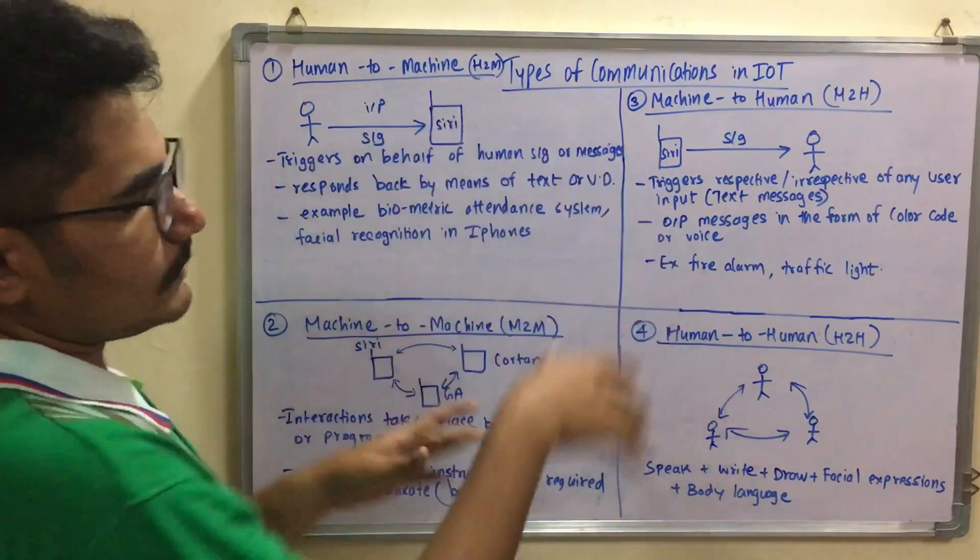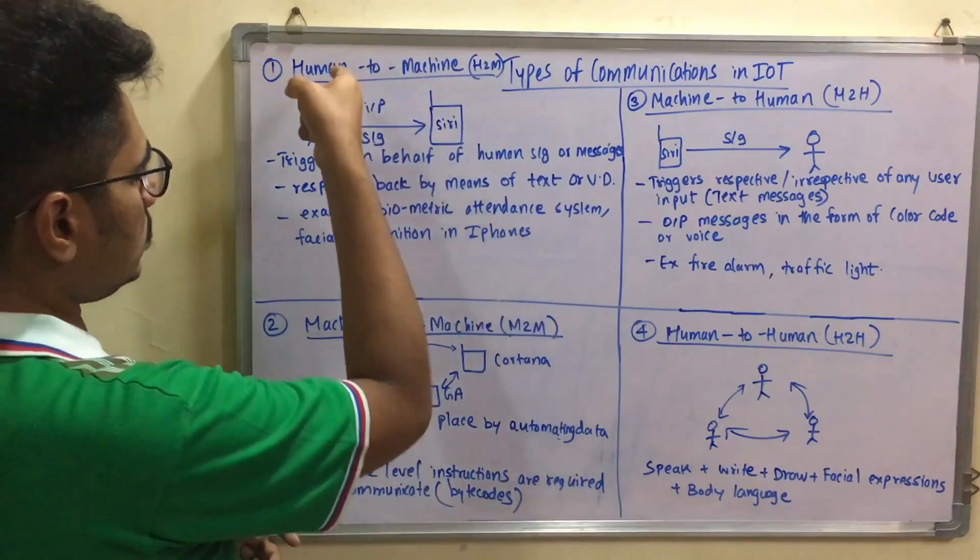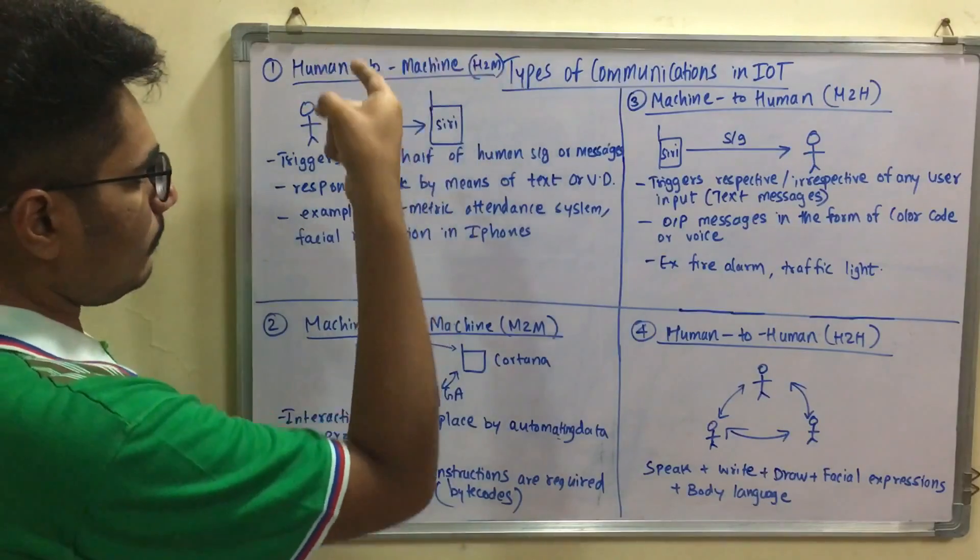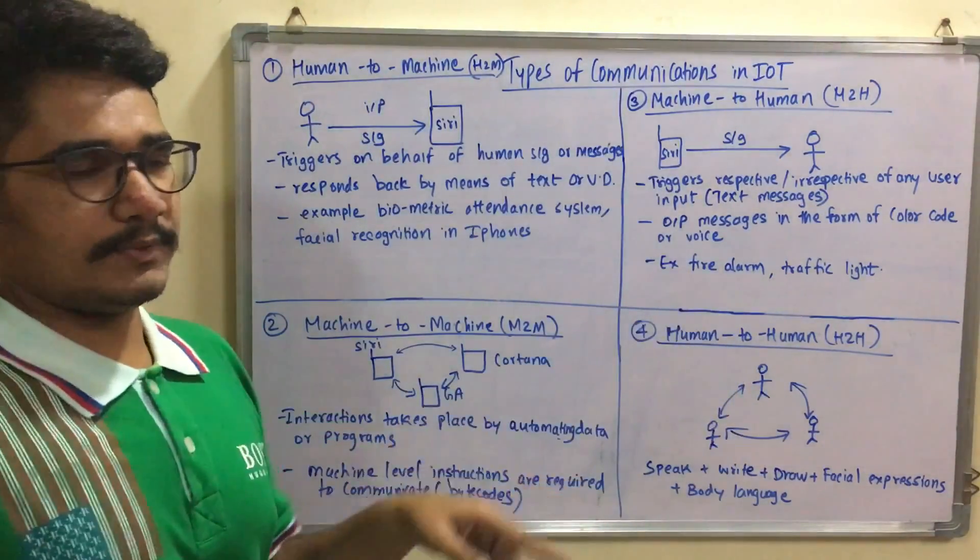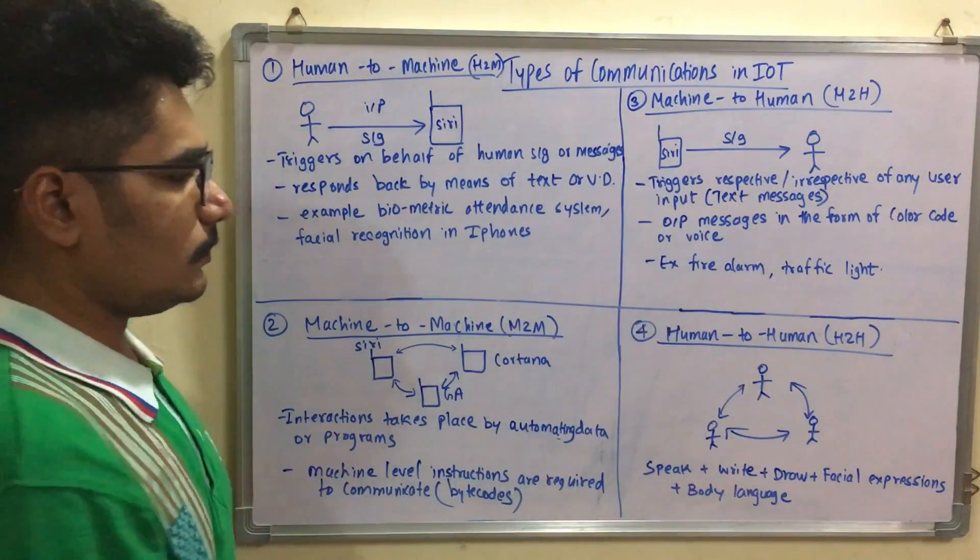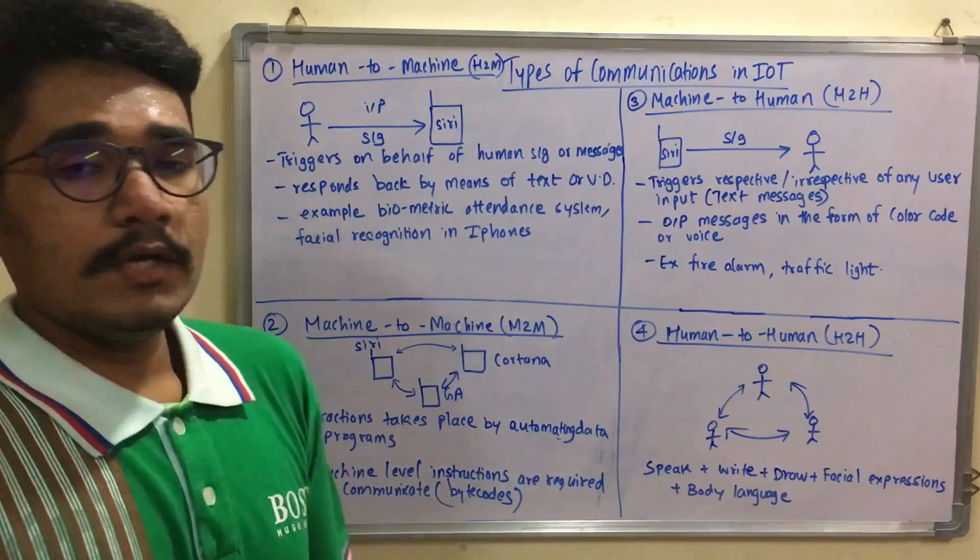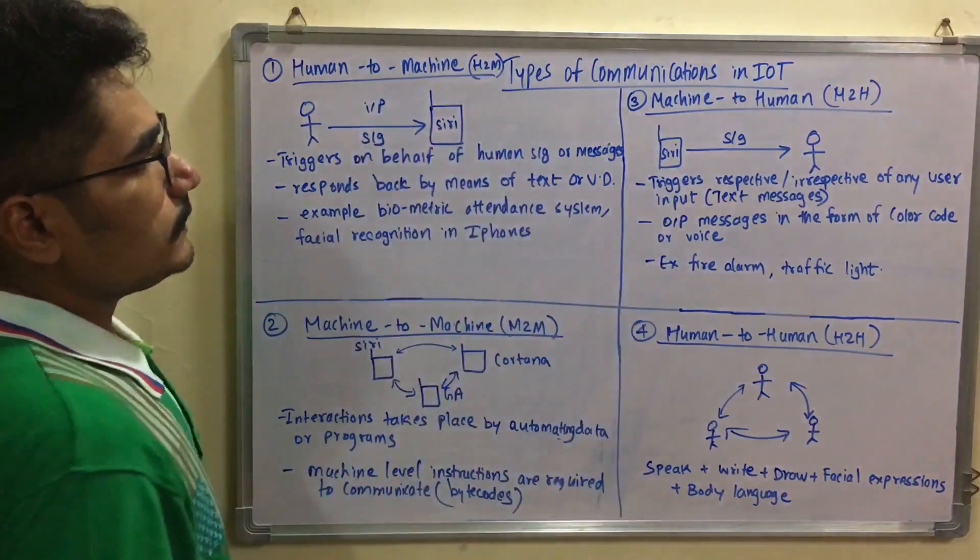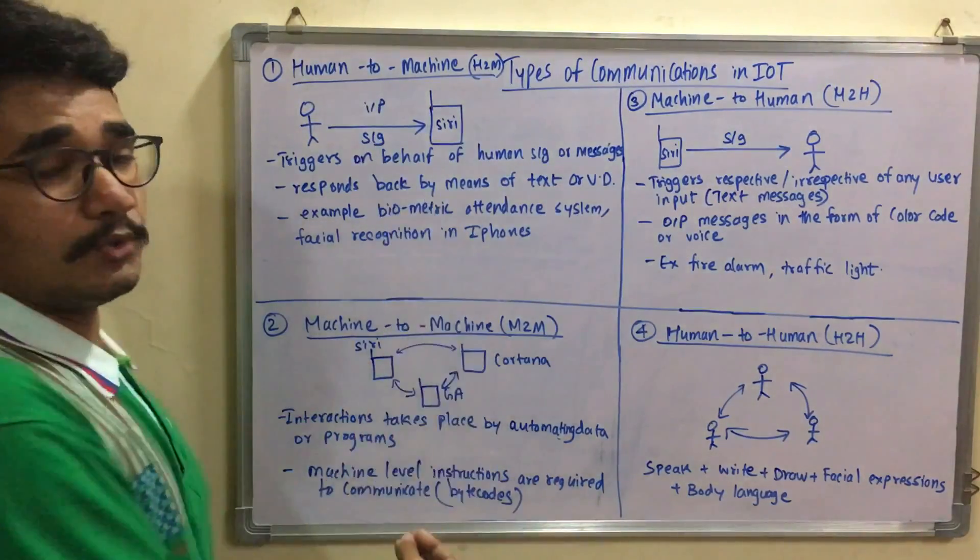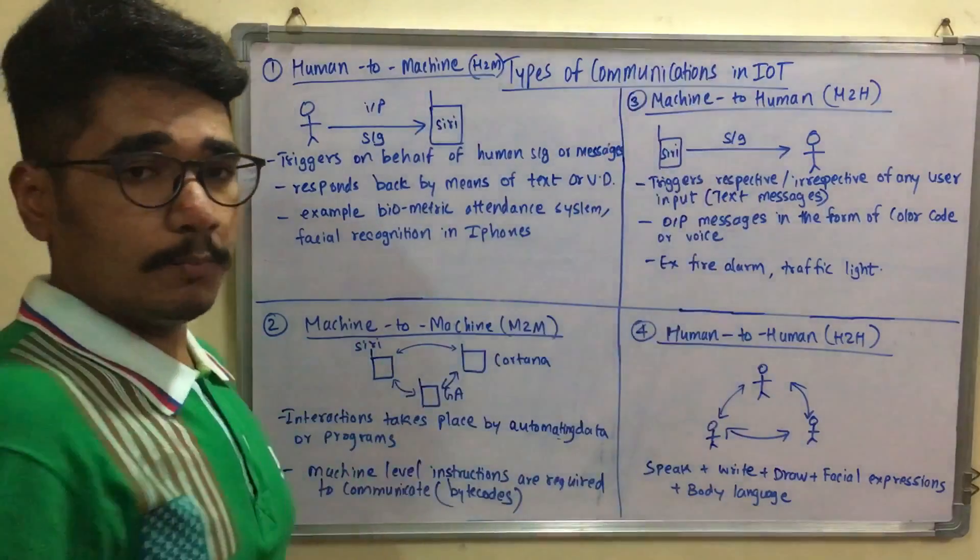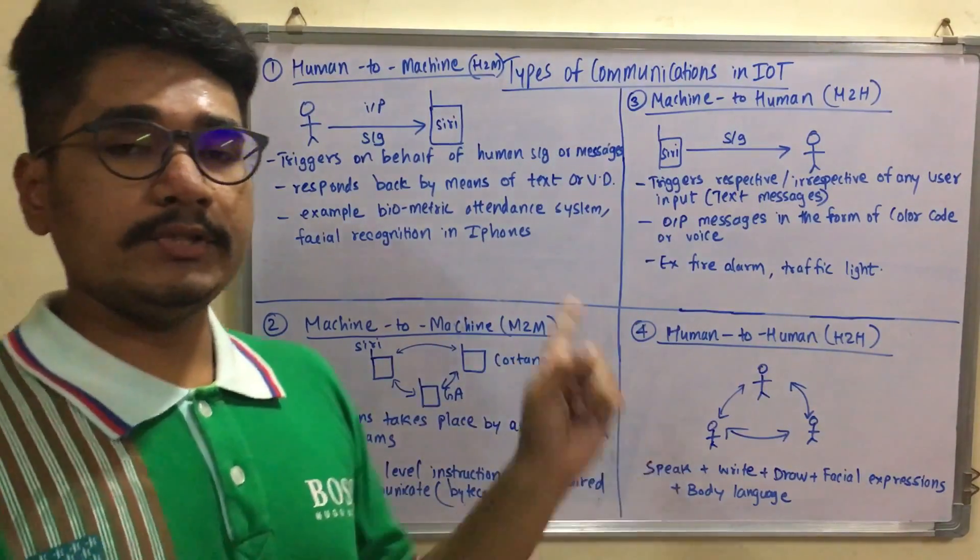To summarize, we have four different types, but frankly speaking, devices only come into picture in H2M, M2M, and M2H. H2H is an exception where devices don't come into picture, but to categorize it we include human to human interaction as well. The four types of communications in IoT are: human to machine, machine to machine, machine to human, and human to human interaction.